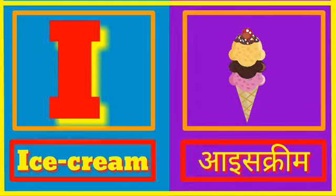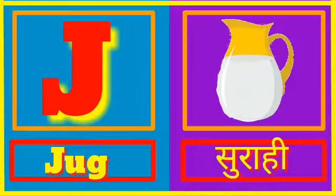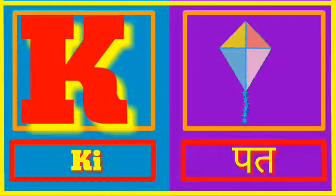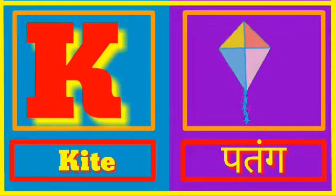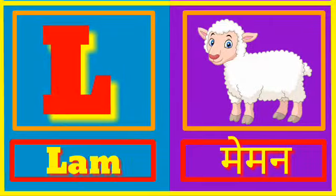I for Ice Cream. Ice Cream means Ice Cream. J for Jug. Jug means Surahi. K for Kite. Kite means Patang.